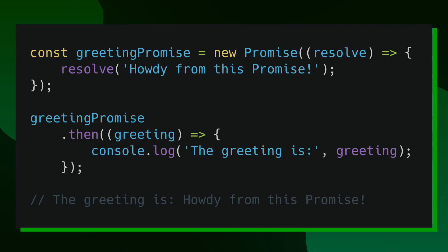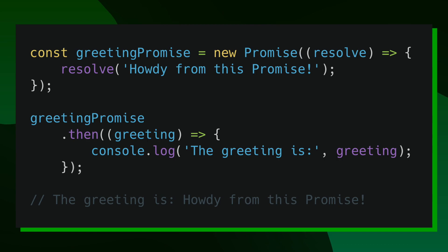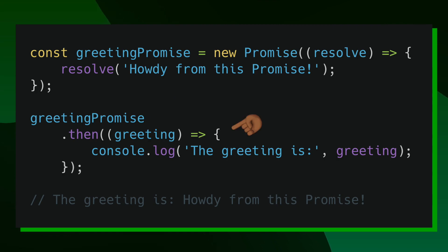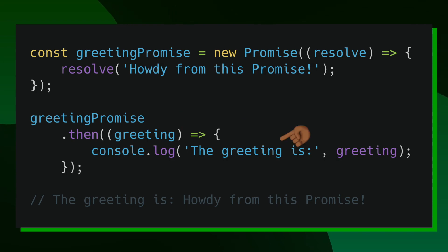We can also take a closer look at promises — probably the most popular data type that handles callback functions in JavaScript. I created a new promise called greetingPromise with the value of new Promise. Inside of the constructor of Promise, I have a callback function that has an argument called resolve. Inside of this callback function, I'm resolving the data 'howdy' from this promise. Now that we've created a promise that resolves data, we're able to use greetingPromise and call the dot-then function on it. Inside of the then function, we're expecting our first argument to be a callback function whose first argument is the data that we resolved. Inside of this callback function, we're printing out the greeting that was given to us. So the final console message should be 'the greeting is howdy' from this promise.